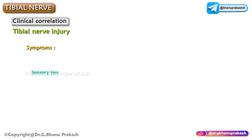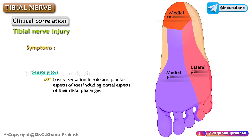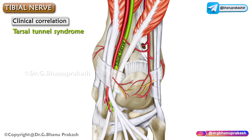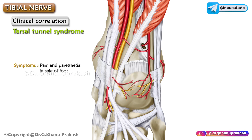Sensory loss includes loss of sensation in the sole and plantar aspects of the toes, including dorsal aspects of their distal phalanges, mainly due to involvement of cutaneous branches. Tarsal tunnel syndrome is a compression of the tibial nerve at the ankle. Its symptoms are pain and paresthesia in the sole of the foot, which often worsen at night.